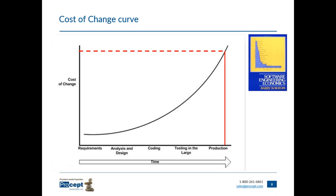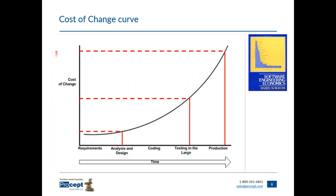Imagine a change made once a system is in production — it may have enormous impacts on end users and the business. If big enough, it could require throwing out the system entirely. If it's a defect, there may be lawsuits, a drop in company share value, and a publicity nightmare. If the same defect was discovered earlier during the testing phase, the cost would be much less; cheaper still if found during design review. Waterfall projects typically get bulk feedback late in the process when costs are greatest.